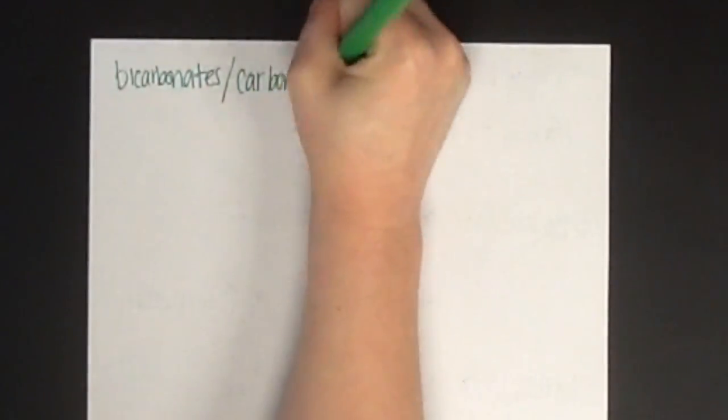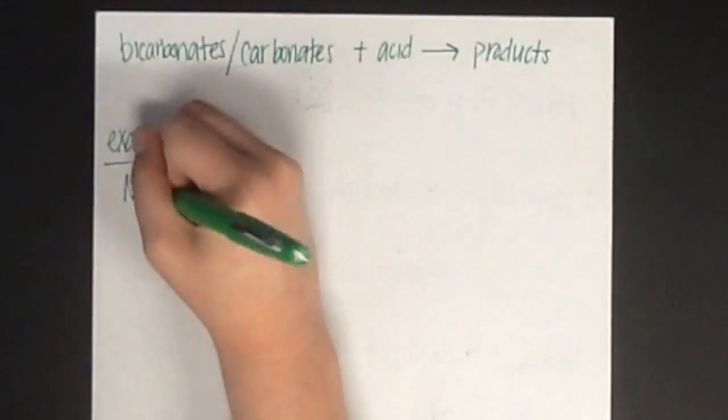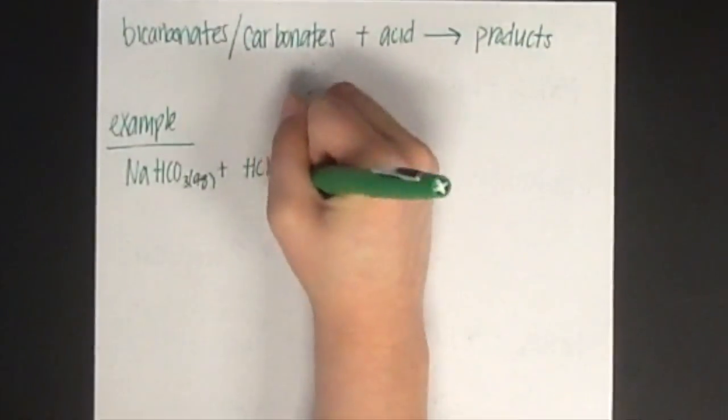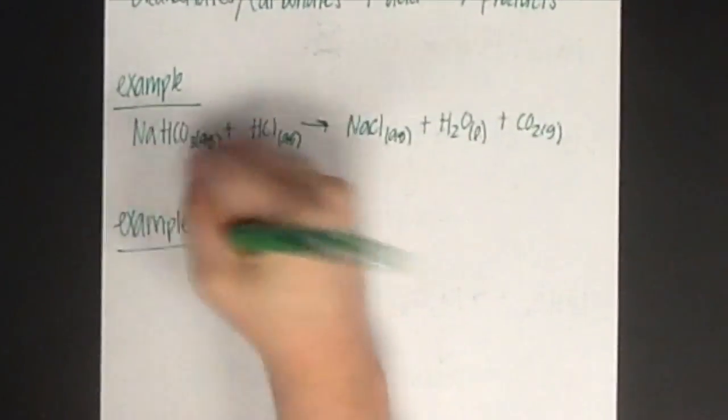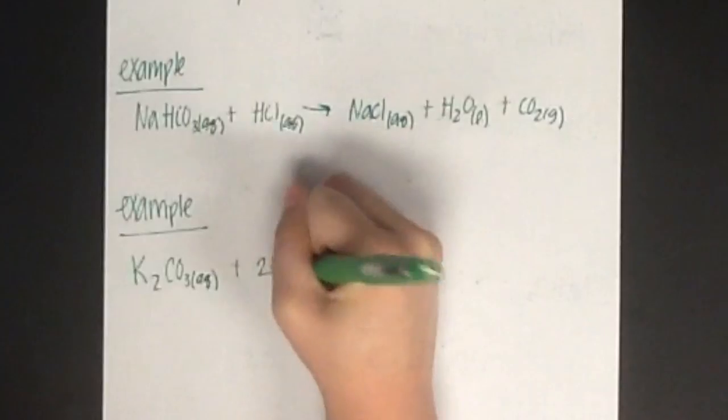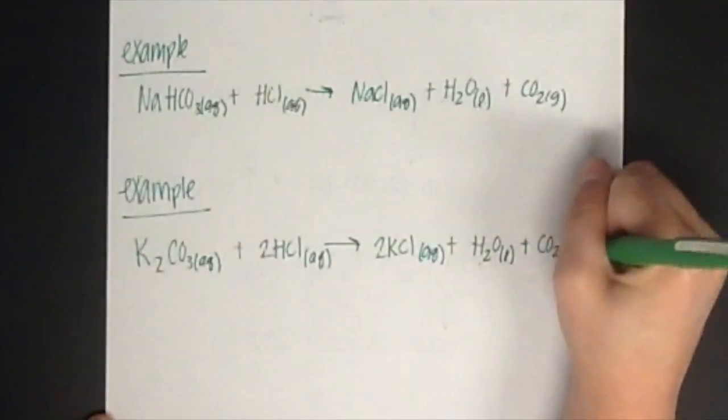Bicarbonates and carbonates react with acids to give similar products. For example, NaCO3 will react with HCl to give NaCl, H2O, and CO2. K2CO3 will react with 2HCl to give 2KCl, H2O, and CO2.